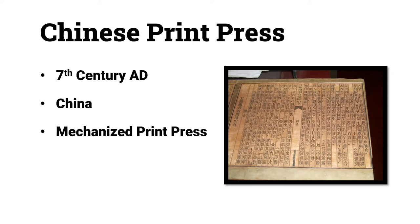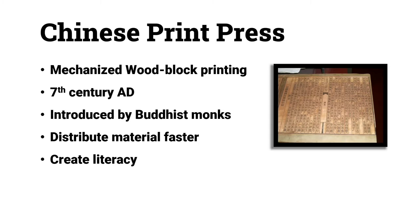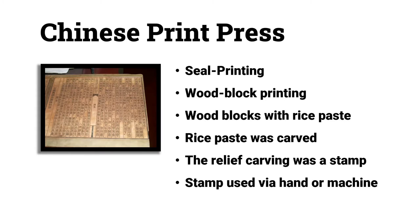Unlike the popular belief that the first mechanized printing press was the Gutenberg Press, there is much evidence suggesting that the introduction of a mechanized print press dates back to as early as the 7th century AD in China. According to Encyclopedia.com, during the 7th century AD, in order to mass produce Buddhist sacred texts, Chinese Buddhist monks introduced a woodblock mechanized printing process that would allow them to distribute their sutras faster and to a wider populace. It is important to note that block printing is not the same printing method as the Chinese seal printing method.